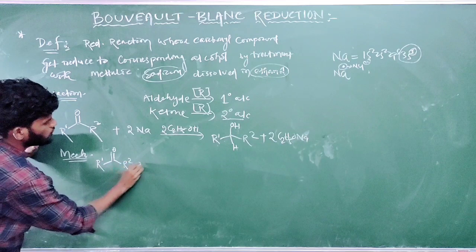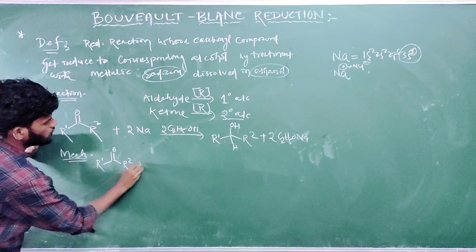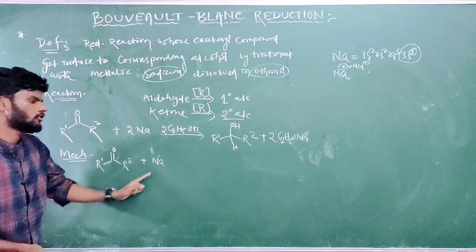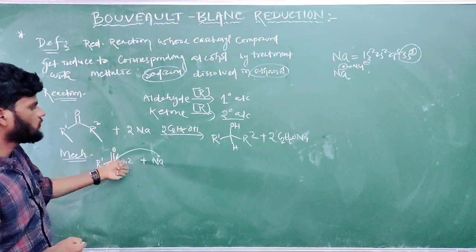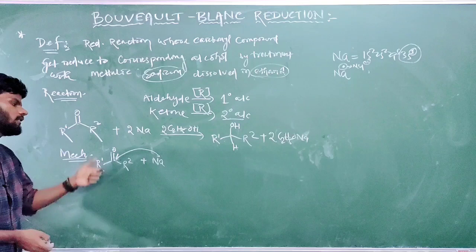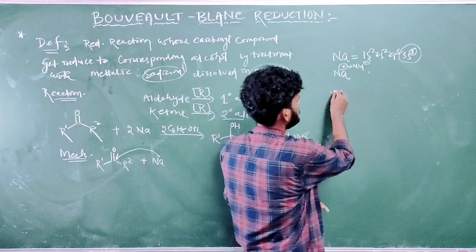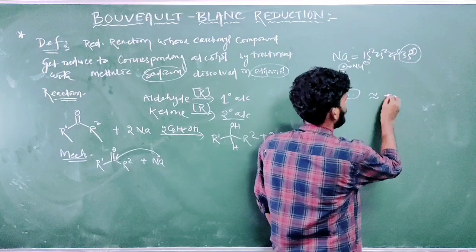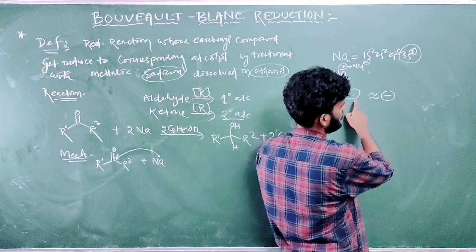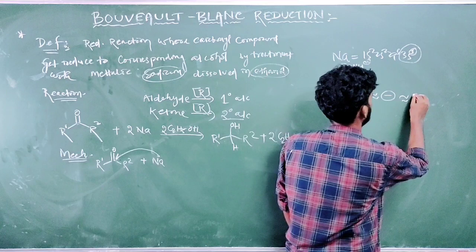So this nucleophile will attach to this electrophilic carbon center. In the mechanism: R1-CO-R2 plus sodium with one single electron — one mole of sodium. This single electron will attach to the carbon center, and this is denoted as a half arrow because of the single electron. If there is a pair of electrons then it would be a full arrow. One concept: one lone pair of electrons is similar to one negative charge — similar, not the same. One lone pair or non-bonded electrons is similar to one negative charge and also similar to one bond.